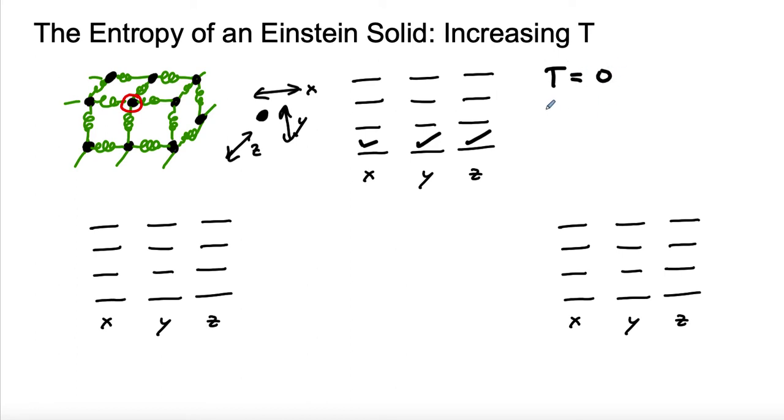So at t equals zero, we saw w is equal to one, and the entropy was equal to zero. But what happens if we increase the temperature? And we know if we increase the temperature, the molecules are going to be moving faster, and they're going to be not just if they're a gas translating more rapidly, or if they're rotating, they could be rotating. But what kind of motion do we have in a solid? In a solid, all we have is vibration. We have these atoms vibrating back and forth in the X, Y, and Z dimension. So if we increase the temperature, they're going to be vibrating in a higher energy state.